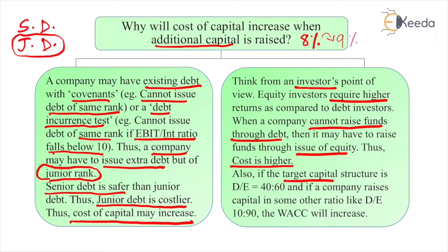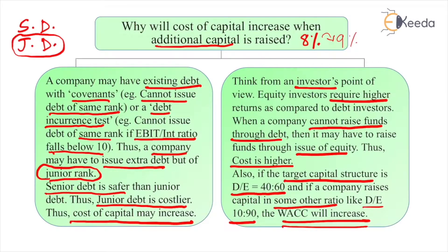Also, if the target capital structure is debt-to-equity 40 to 60, and the company raises capital in some other ratio like 10 to 90, the WACC will again increase. Mathematically, if equity is 90% instead of 60% earlier, and equity is costlier than debt, of course your WACC has to increase. These are the reasons why cost of capital would increase when additional capital is raised.